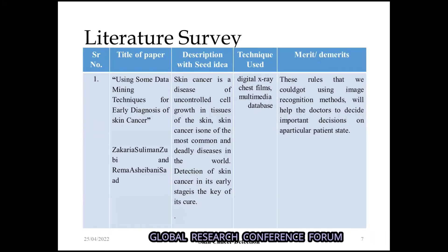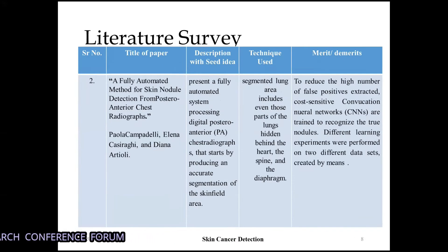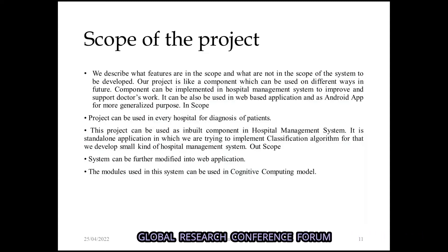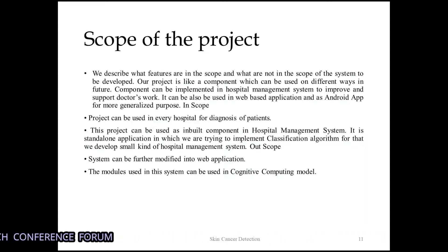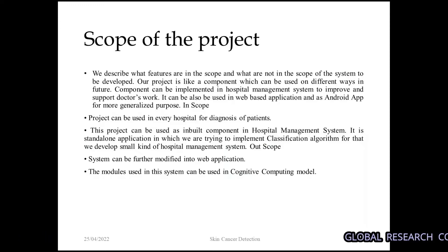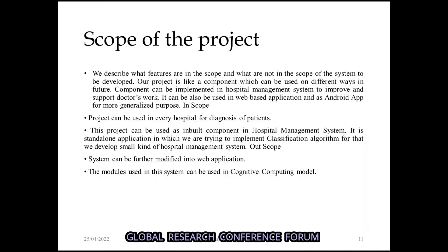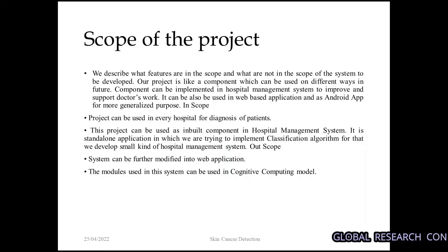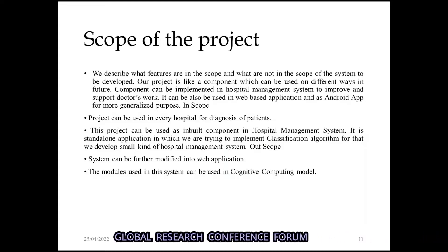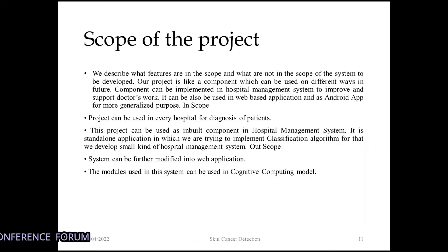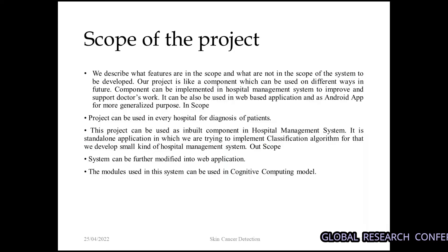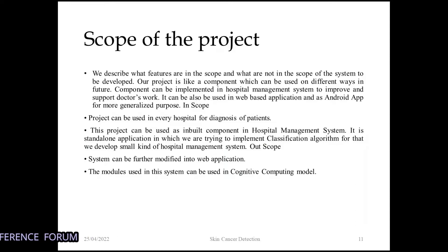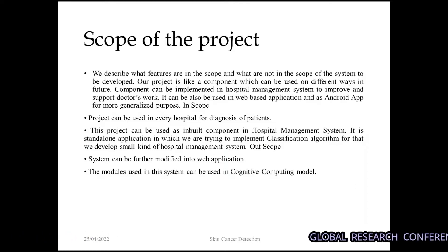These are the literature surveys that we referred — there are four papers in total. Regarding the scope of the project, we used a CNN model to classify the dataset, analyze and access the input from the dataset, and extract all features from the images. Then we classify them based on their features.